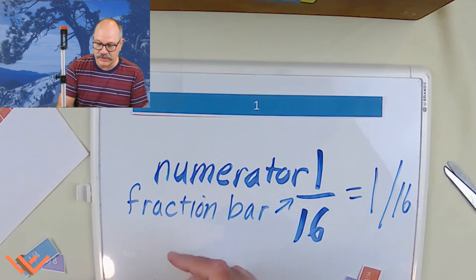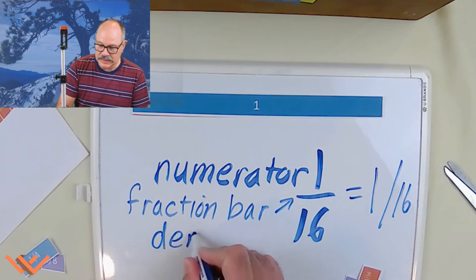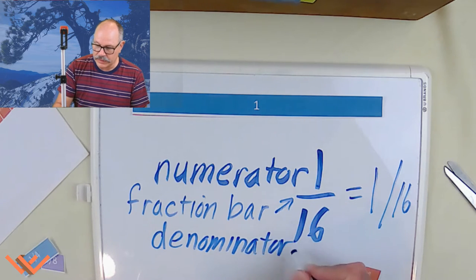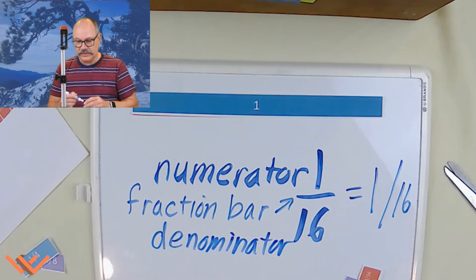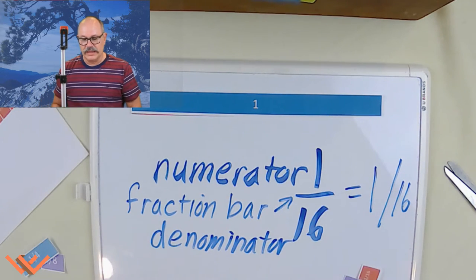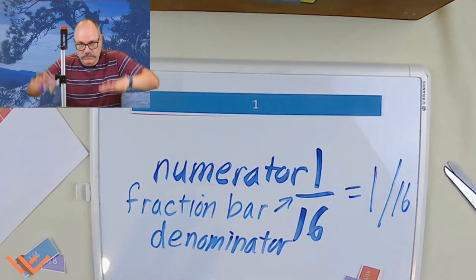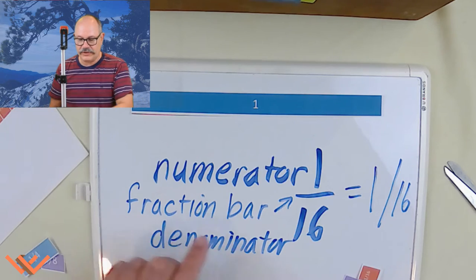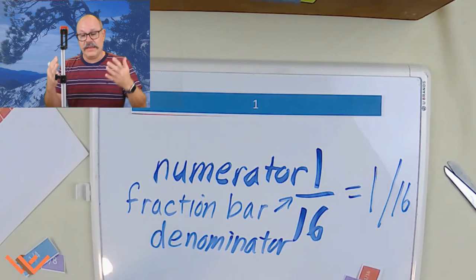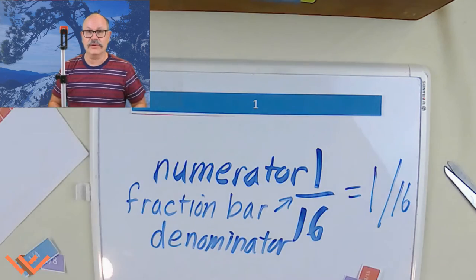And then down here, the bottom number, that's called the denominator. Denominator. There we go. So, the denominator is the bottom number. Just think that, like, denom is like down low. Fraction bar is that bar that goes across or it's slanted. And then we have the numerator, which is the number on top.